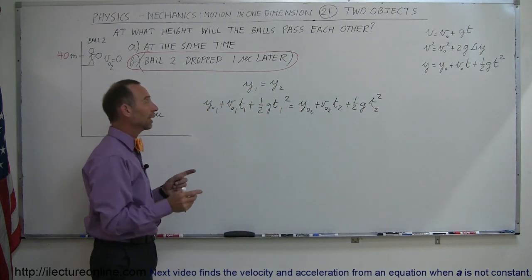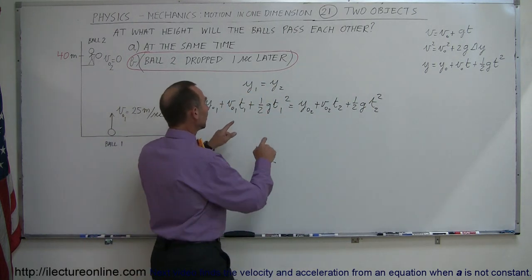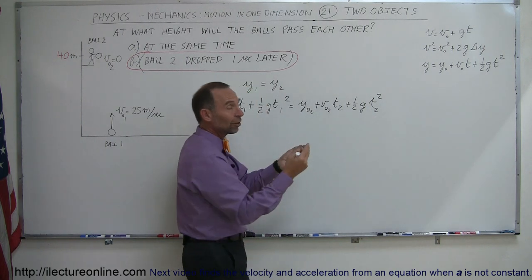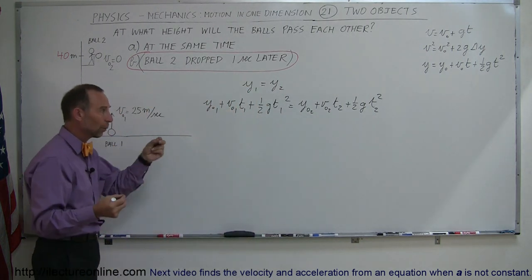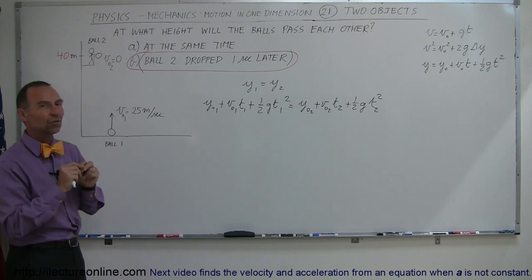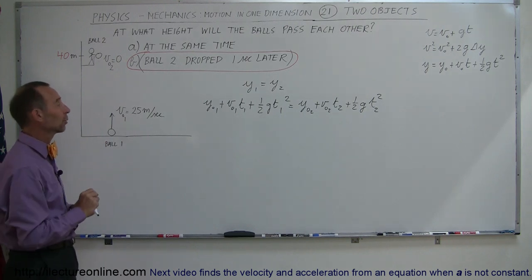Notice the difference is that in the previous example, t1 and t2 were equal to each other. It happened at the same time when one was dropped and the other was thrown up, but in this case there's a one second difference, so t1 is not equal to t2, so we have to take that into account.